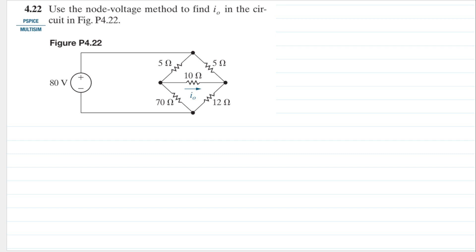Hello, my name is RD and we are going to solve problem 4.22 from the Nielsen and Riddle book. The question is: use the node voltage method to find i0 in the circuit in figure P4.22.